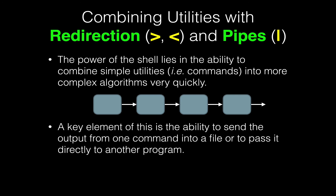A key element of being able to do this is the ability to send the output from one command into a file, or even better, to pass it directly into the input of another program. This is the job of these special redirection characters — the greater-than and less-than characters — and the pipe command, which is the vertical bar on your keyboard.